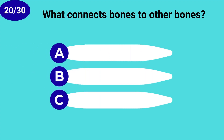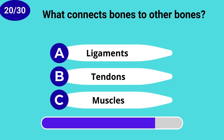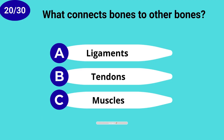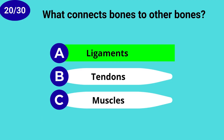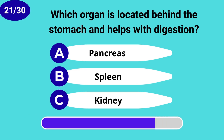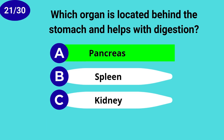What connects bones to other bones? Ligaments. Which organ is located behind the stomach and helps with digestion? Pancreas.